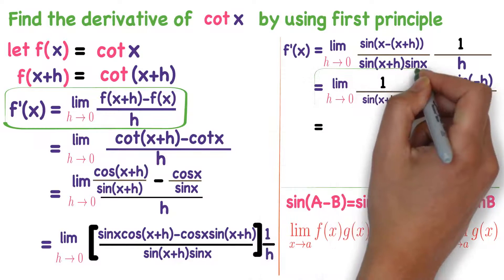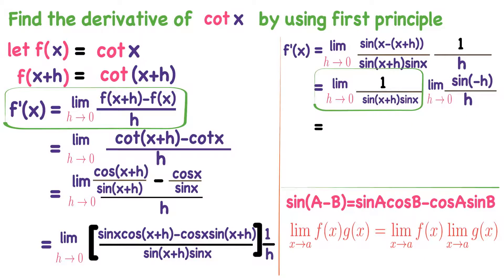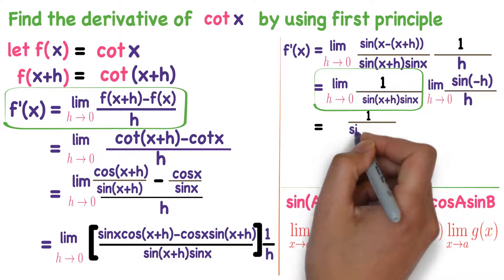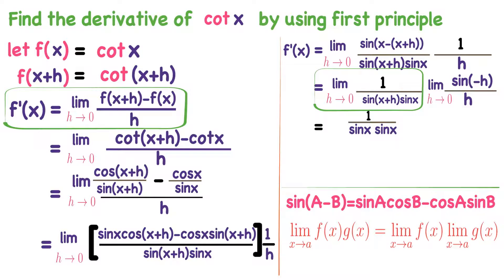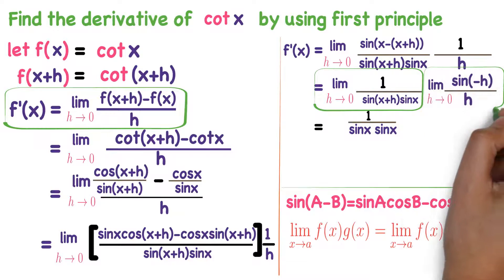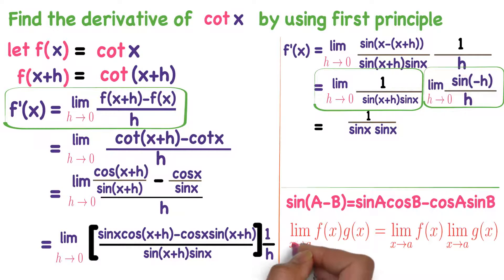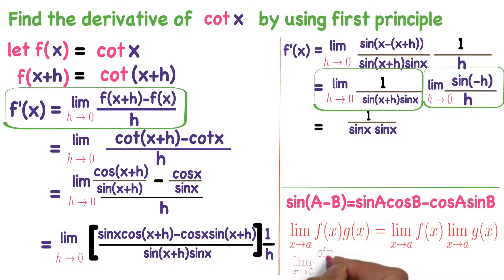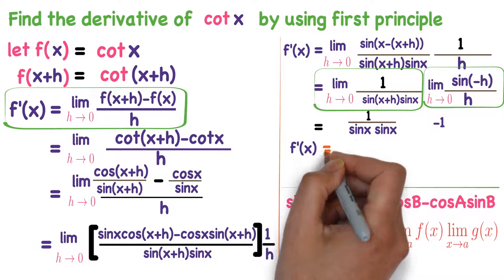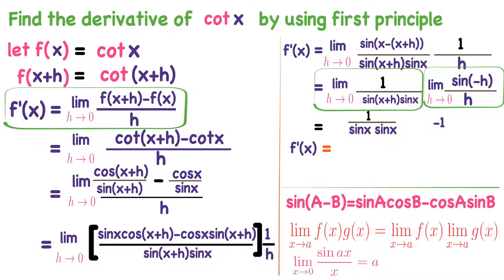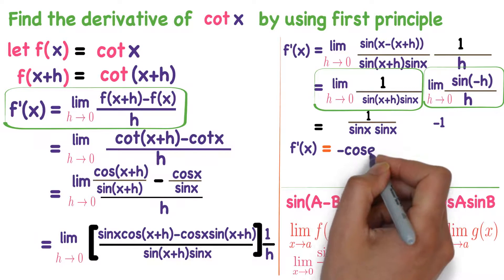You apply the limit to the first part. Wherever h is there, substitute 0. You get 1 divided by sin of x plus 0 into sin x. Now apply the limit to the second part. We know the formula: limit x tends to 0 of sin ax divided by x equals a. Here a is minus 1. So the second part gives minus 1. And 1 divided by sin x, the formula is cosecant x, so 1 divided by sin squared x equals cosecant squared x.